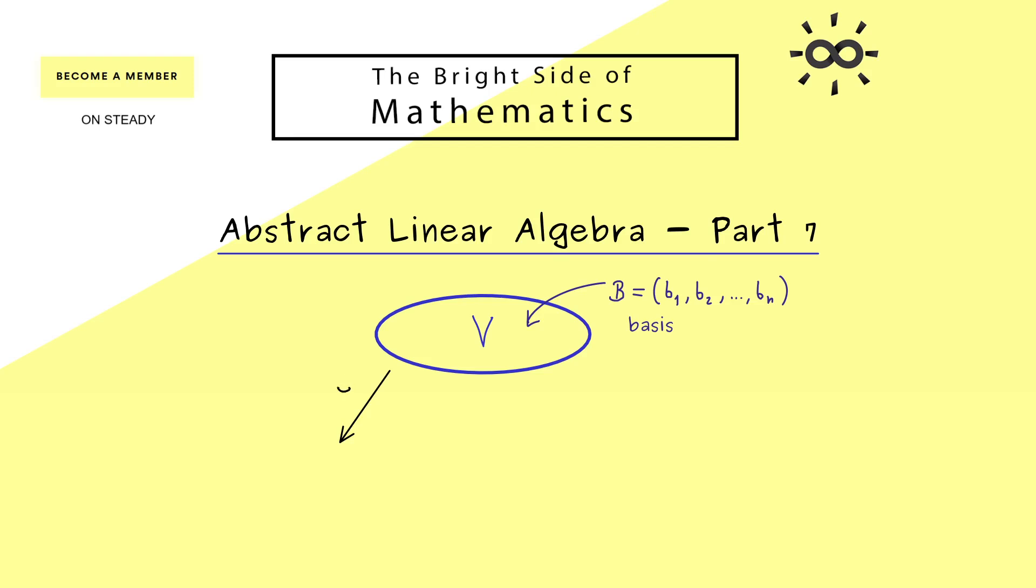And now we know we can use the basis isomorphism φ_B to translate V to F^n. In other words now we are able to calculate everything in our common R^n or C^n. For example b1 is now just represented by the canonical unit vector e1.